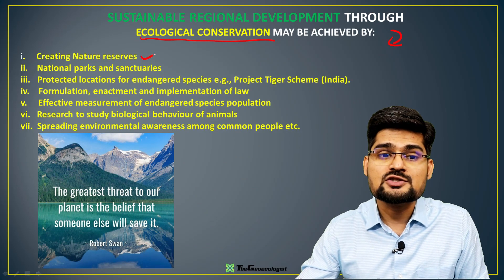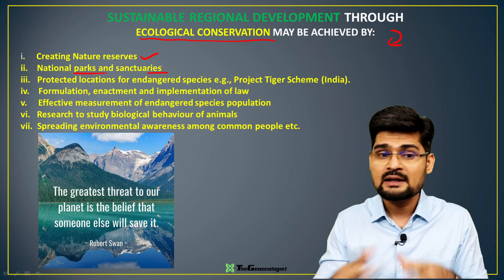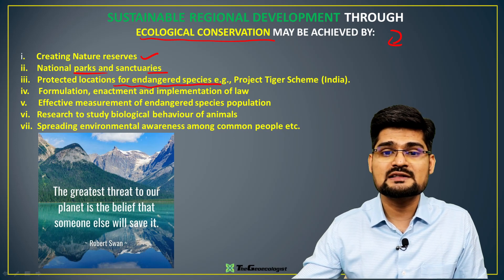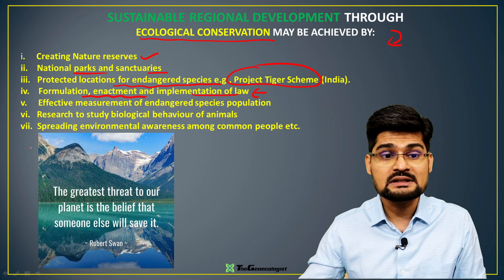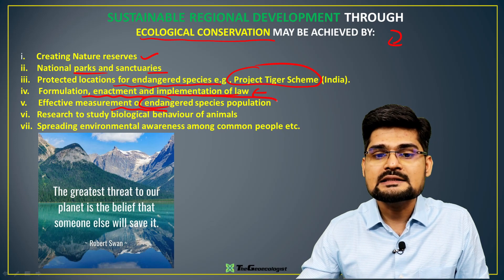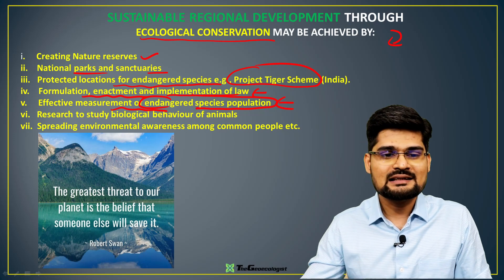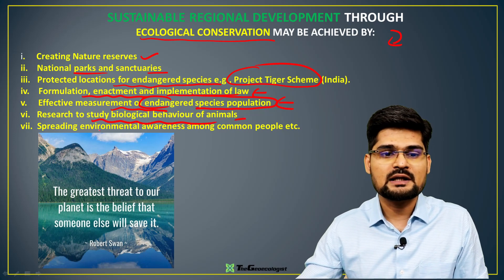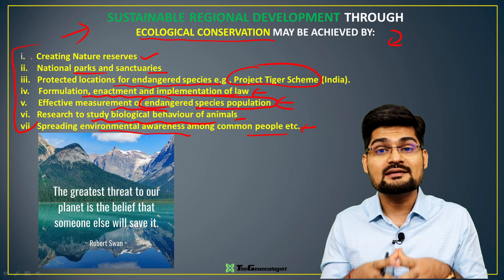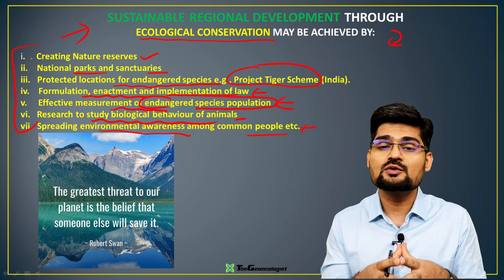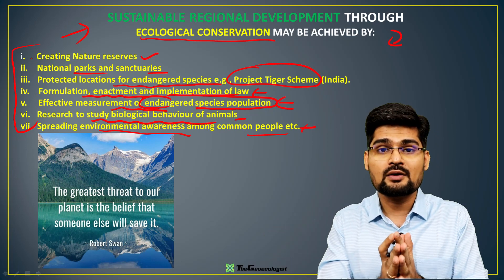Sustainable regional development through ecological conservation can be achieved in several ways: creating natural reserves, national parks, sanctuaries, and biosphere reserves — India has several of these; establishing protected locations for endangered species such as Project Tiger in India; formulating, enacting, and implementing effective laws; conducting animal census counts to measure endangered species populations; researching biological behavior of animals; and spreading environmental awareness among common people.